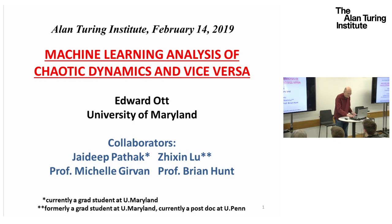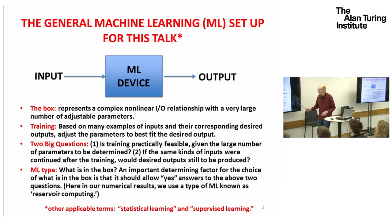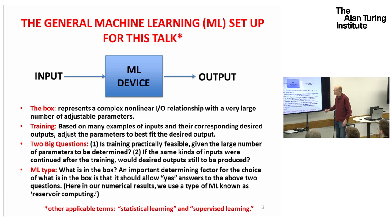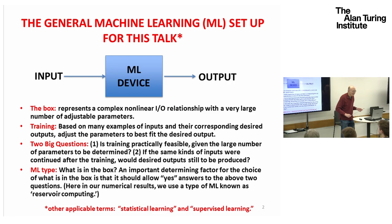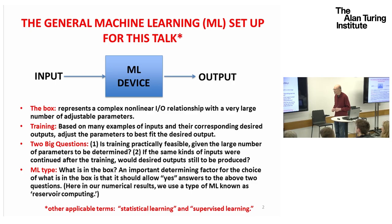The general machine learning setup for this talk is shown in this cartoon. This box represents a complex nonlinear input-output relationship with a very large number of adjustable parameters. We seek to do training, which means that based on many examples of inputs and their corresponding desired outputs — what's desired depends on the task — we seek to adjust these parameters to best fit the desired outputs. We hope that the best fit will be extremely close to the actual thing that's desired.